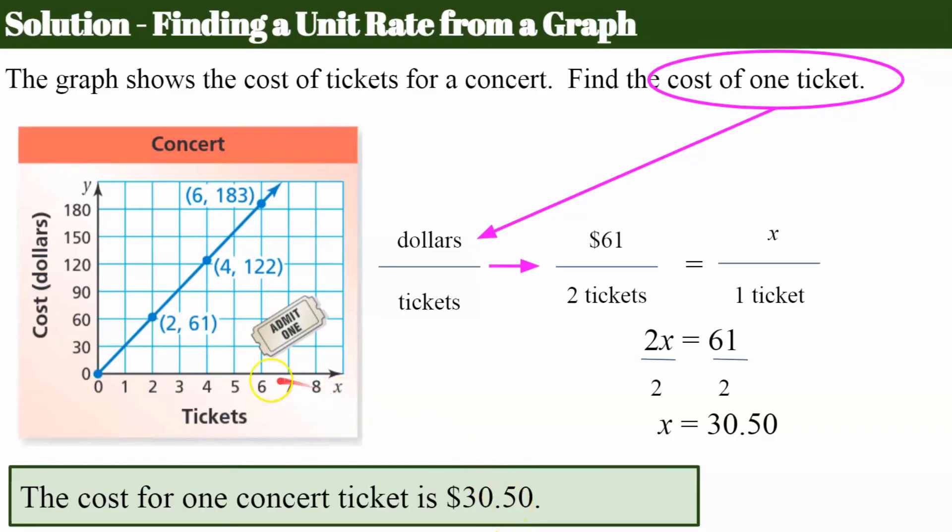One other tip I want to leave you with is that because it's a proportional relationship, any one of these ordered pairs, Y over X, will simplify to $30.50. 183 divided by six, $30.50. 122 divided by four, $30.50. And 61 divided by two, $30.50. So every time you have a graph of a proportional relationship, every ordered pair on this line simplifies to the unit rate.